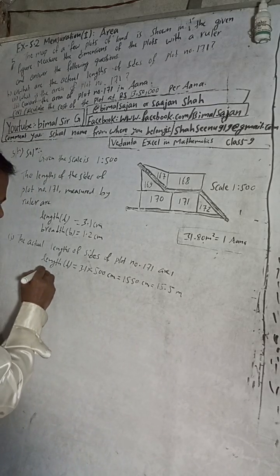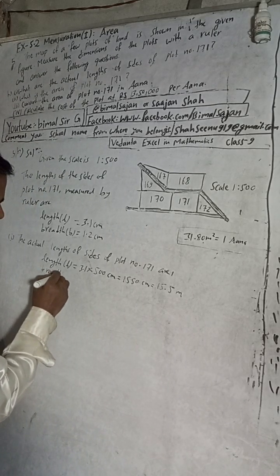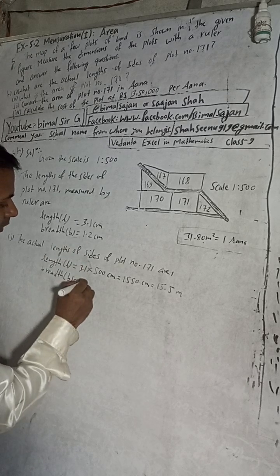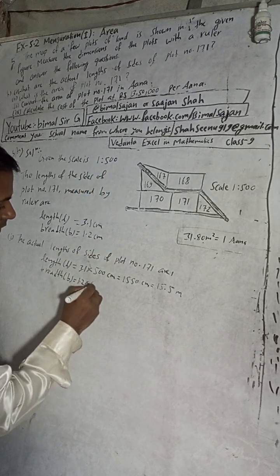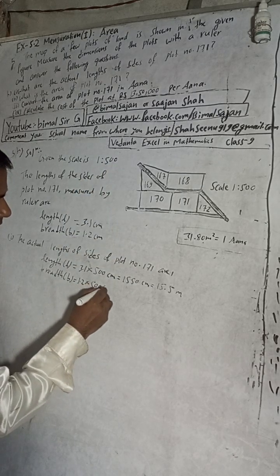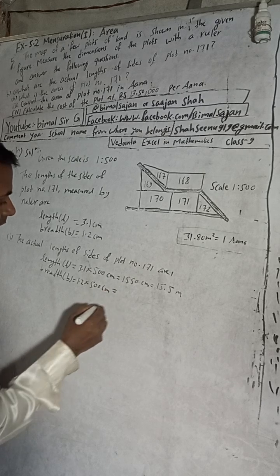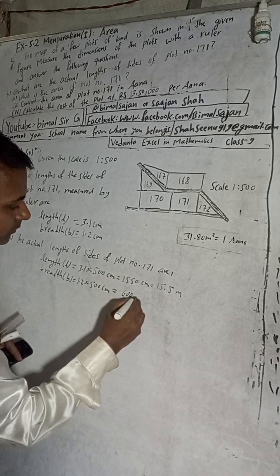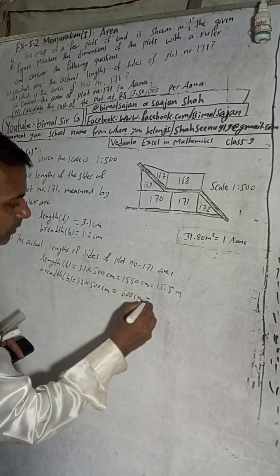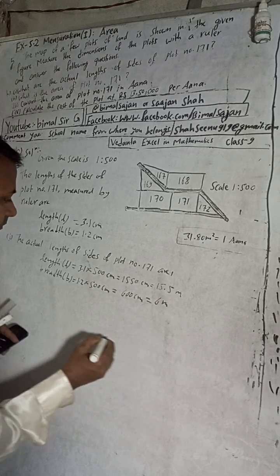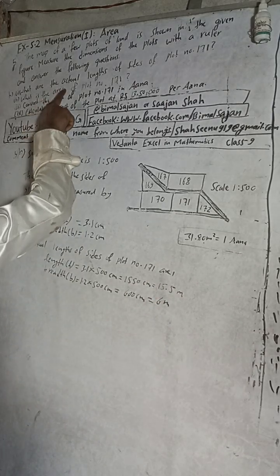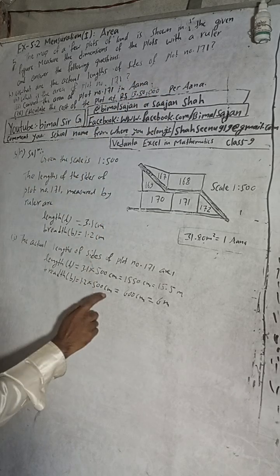Now the breadth: Breadth B is equal to 1.2 cm multiplied by the scale factor 500. So 1.2 into 500 equals 600 cm, which gives us 6 meters. So the actual lengths of plot number 171 are: Length = 15.5 meters and Breadth = 6 meters.